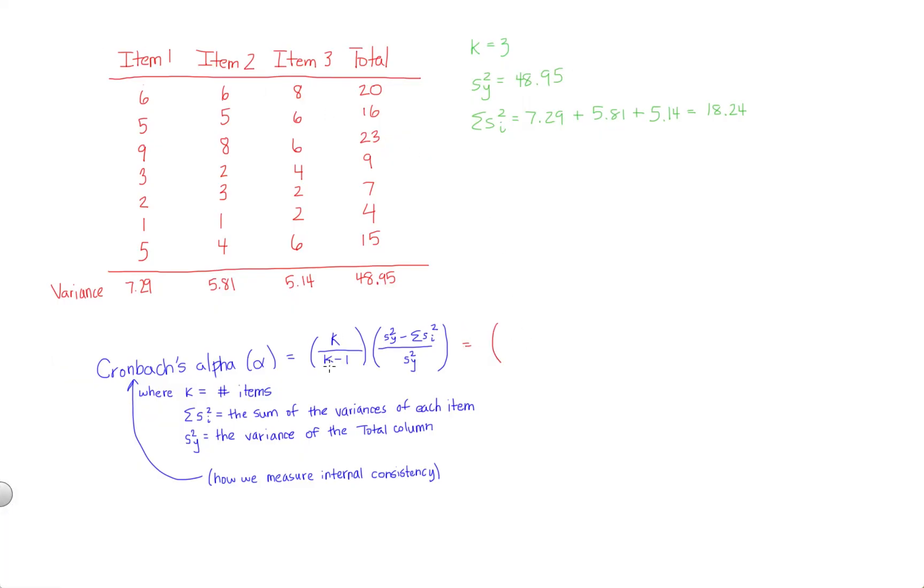So here we have k over k minus 1. k equals 3. So this is going to be 3 over 3 minus 1, which will eventually come out to 2. So s squared sub y, we already know, is 48.95 minus the sum of each individual item's variance. That was 18.24 divided by 48.95. So if you plug this into your calculator, you're going to end up with 0.941, which is your Cronbach's alpha.